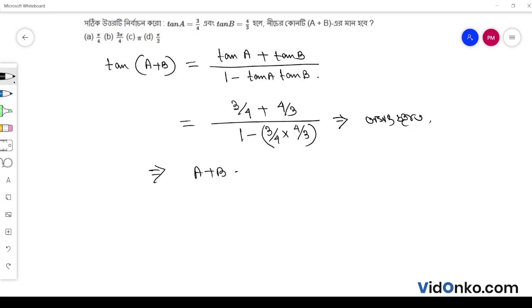Since tan a plus b is undefined, a plus b equals pi by 2. Therefore, the answer is option A, which equals pi by 2.